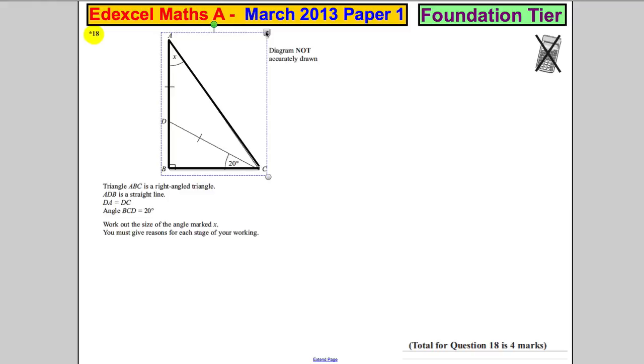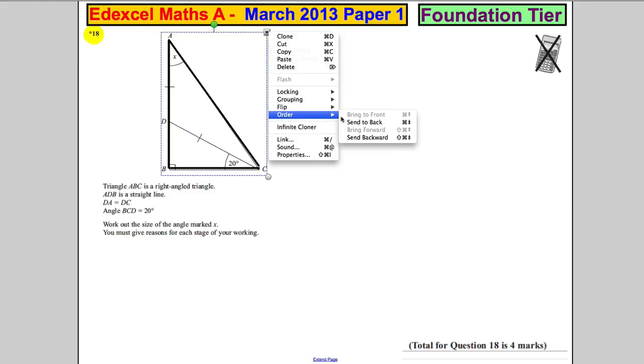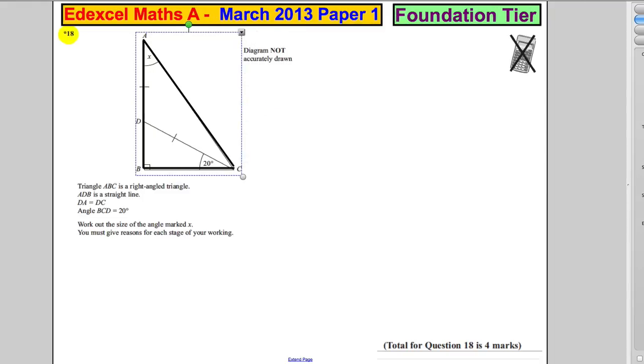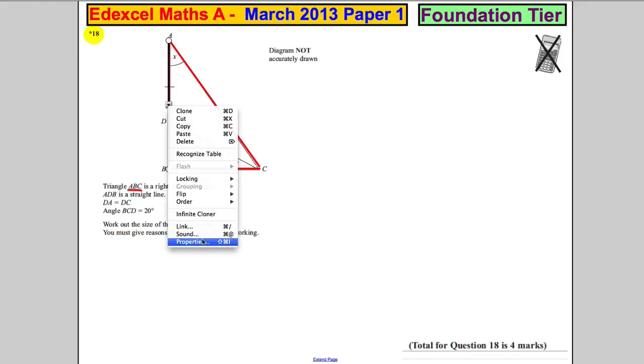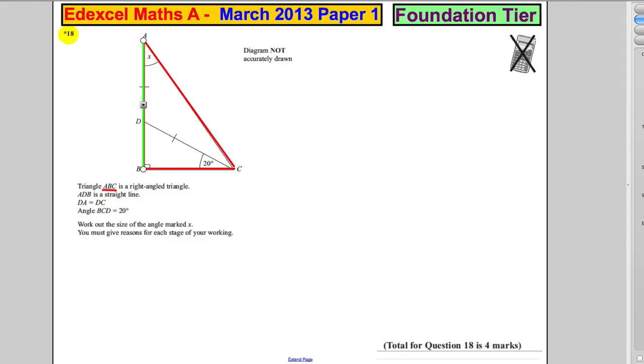I'm going to color it just so we've got triangle ABC there in red. ADB is a straight line, so ADB is a straight line, and I'm going to color that green so we know what we're talking about.